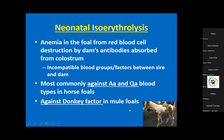Mule foals are at particularly high risk because their blood is very foreign to a horse. If a mare sees a tiny amount of mule blood - which contains donkey genetic material - she'll mount a tremendous antibody response. There's a protein called 'donkey factor' on donkey red blood cells that is very strongly antigenic. Mule foals are particularly high risk for NI because of that.